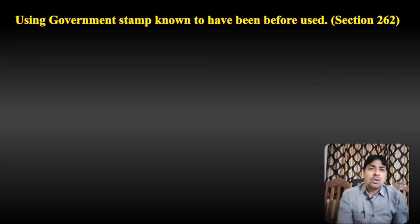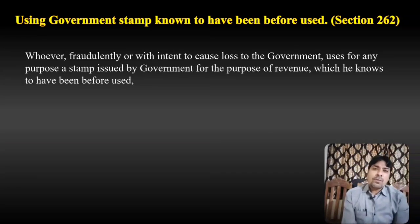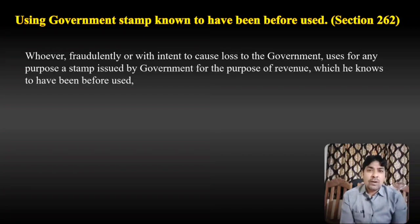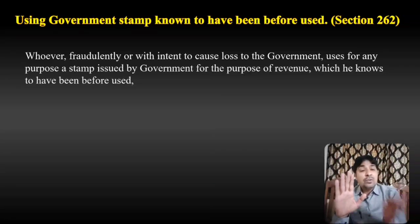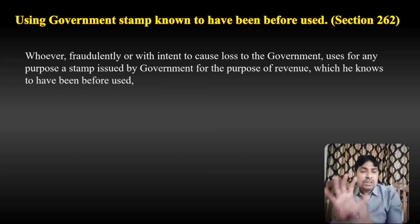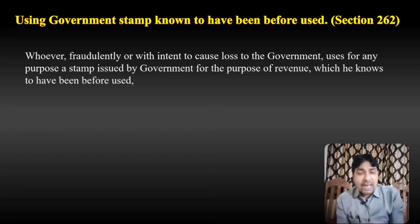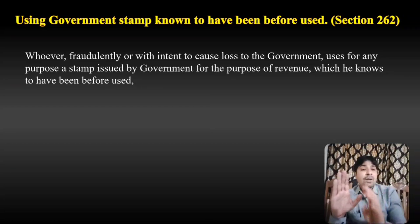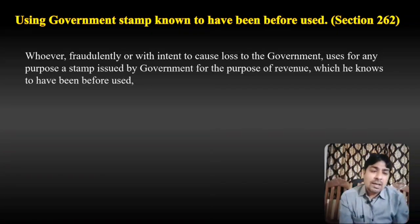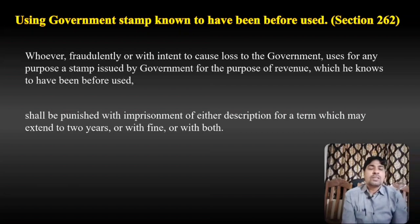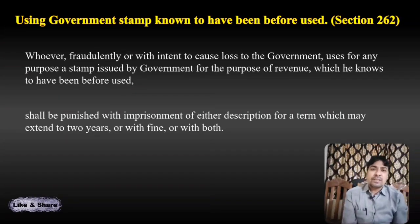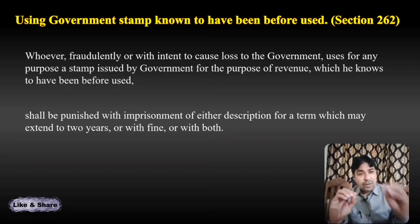Section 262 — Using a government stamp known to have been before used. Whoever fraudulently or with intent to cause loss to the government uses for any purpose a stamp issued by government for the purpose of revenue which he knows to have been before used — if a person tries to reuse an already-used government stamp from a prior transaction, with fraudulent intention or with intention to cause loss to the government — shall be punished under Section 262 with imprisonment which may extend to 2 years, or with fine, or with both.